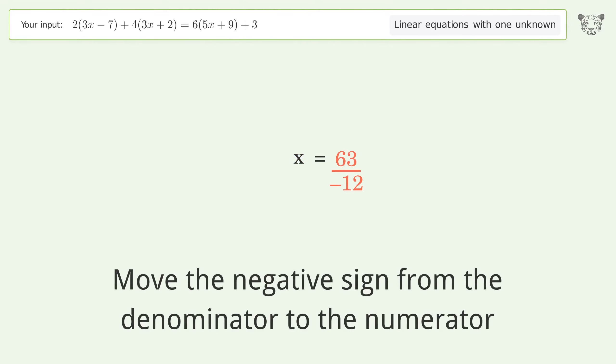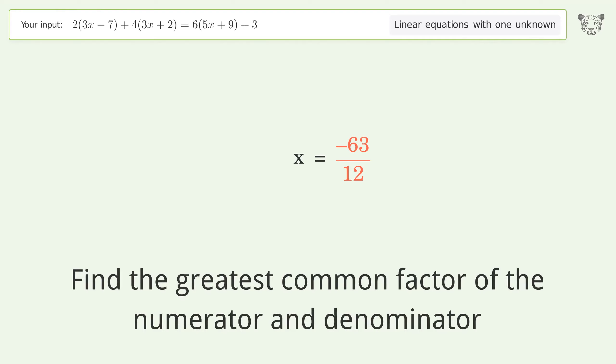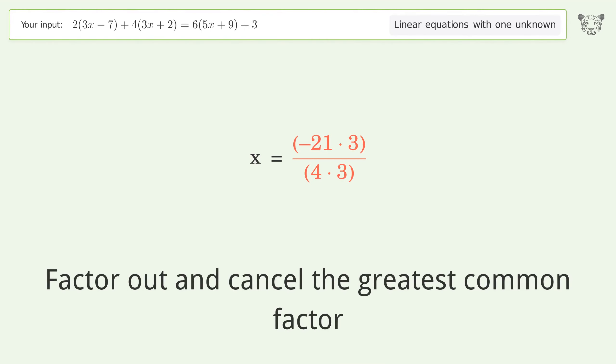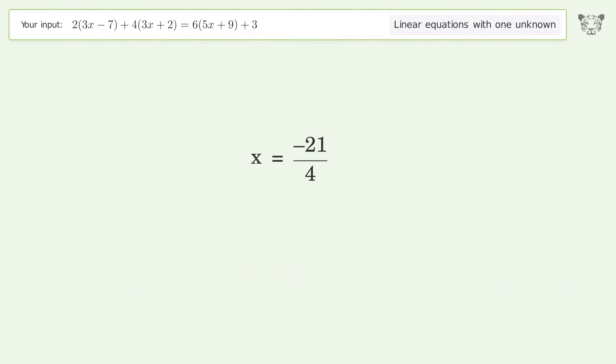Move the negative sign from the denominator to the numerator. Find the greatest common factor of the numerator and denominator. Factor out and cancel the greatest common factor. And so the final result is x equals negative 21 over 4.